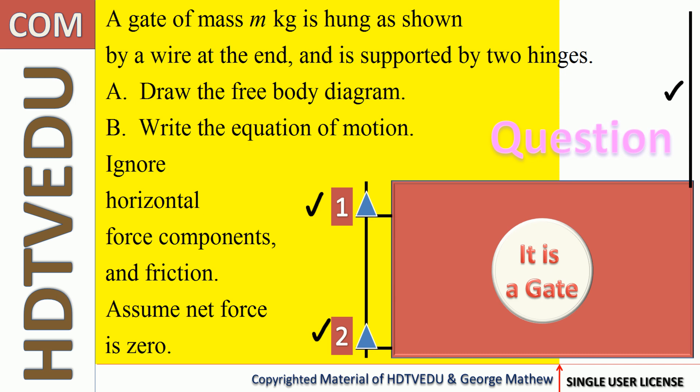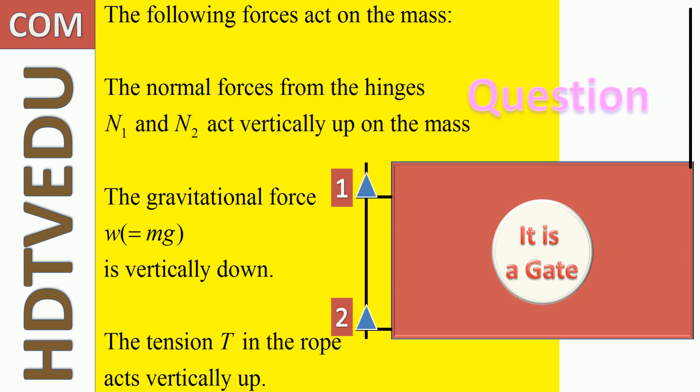Assume net force is zero. The following forces act on the mass: the normal forces from the hinges, N1 and N2, act vertically up on the mass. The gravitational force W equals mass times acceleration due to gravity, acting vertically down. The tension T in the rope acts vertically up.